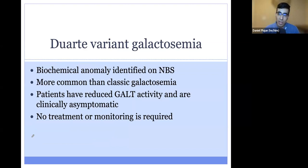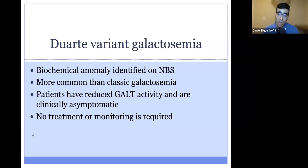One form of galactosemia that shows up is Duarte variant galactosemia. This particularly shows up on newborn screening and is more of a biochemical abnormality than a disease — certainly more common than classic galactosemia. Patients have reduced GALT activity, reduced to a level detectable by newborn screening but not low enough to cause clinical symptoms. These patients are asymptomatic, and no treatment or monitoring is required after identification.